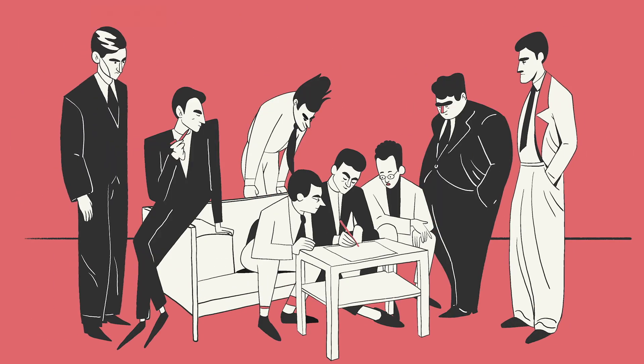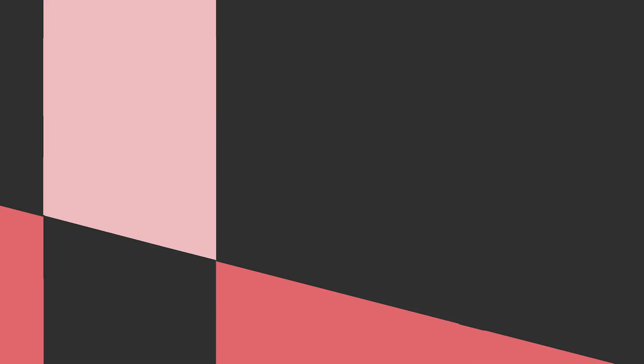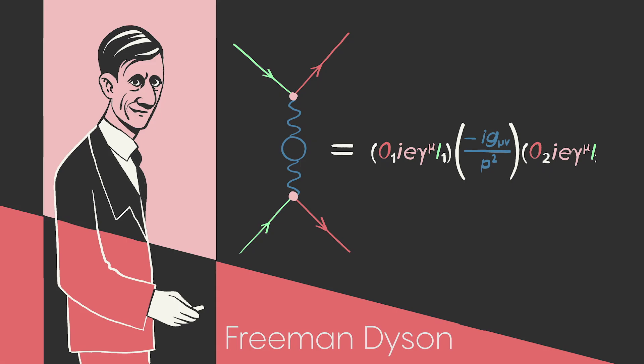When Feynman first introduced his diagrams, his peers remained perplexed by how to use them in their own work. Fellow physicist Freeman Dyson translated the diagrams into mathematics that researchers could understand and work with. He also showed how infinities could be converted into finite values through renormalization.